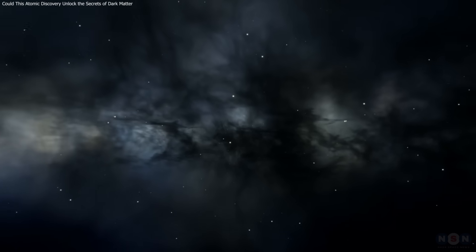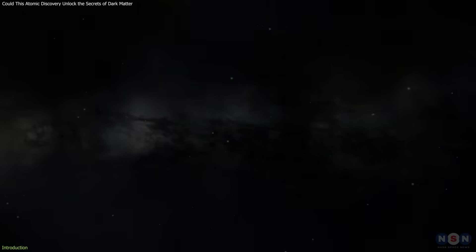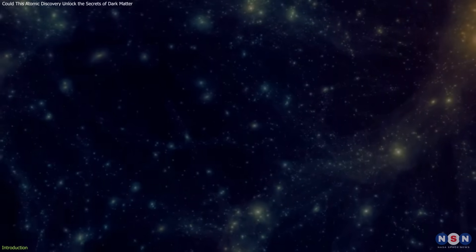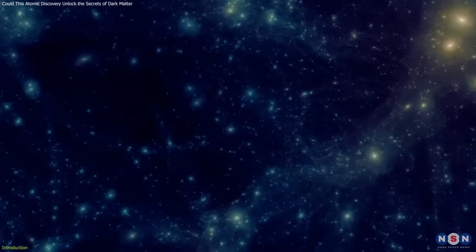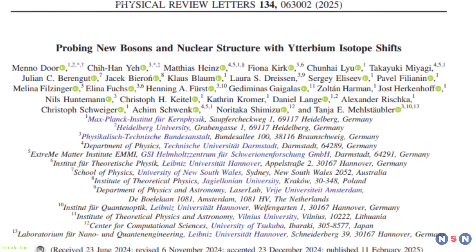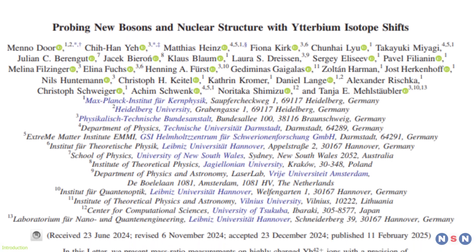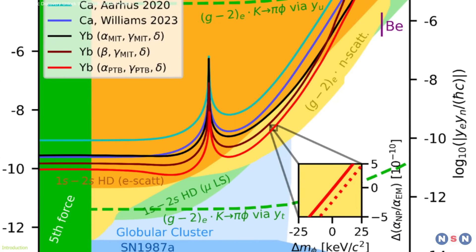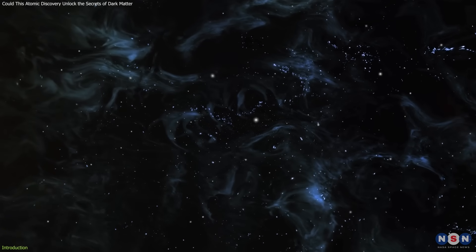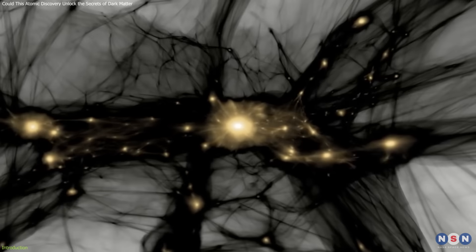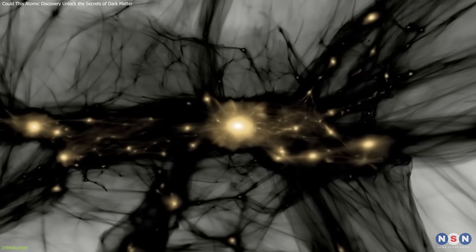For decades, scientists have been trying to understand dark matter, a mysterious substance that makes up around 27% of the universe. One of the biggest questions in physics is whether dark matter interacts with ordinary matter through forces other than gravity. Recently, researchers studying the rare earth element ytterbium discovered something unexpected, an anomaly in its isotope shifts. This unusual finding raised the possibility of a new dark force, a hidden interaction that could bridge the gap between dark matter and normal matter.